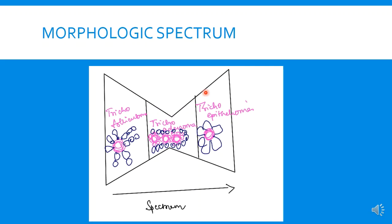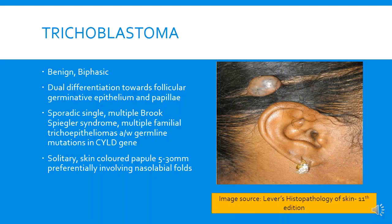To recap the spectrum: trichofolliculoma has a large central cystic cavity filled with keratin with small branching epithelial walls; trichoadenoma has numerous horn cysts in the dermis surrounded by eosinophilic cells; and trichoepithelioma has more basaloid cells with peripheral palisading and occasional horn cysts.